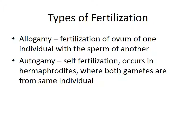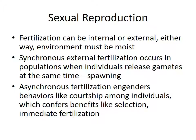There are two types of fertilization in sexual reproduction. Allogamy is when the fertilization of the egg of one individual is done with the sperm of another individual — that's standard sexual reproduction. But you could have autogamy, or self-fertilization, which occurs in hermaphrodites where both gametes are from the same individual.